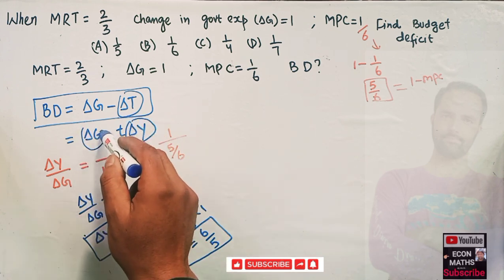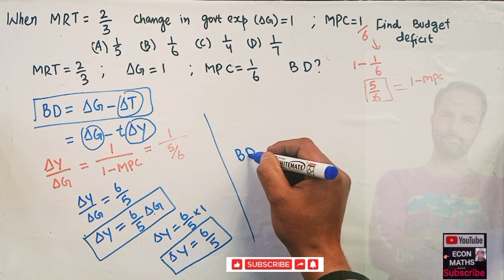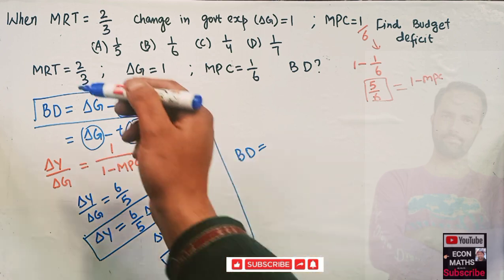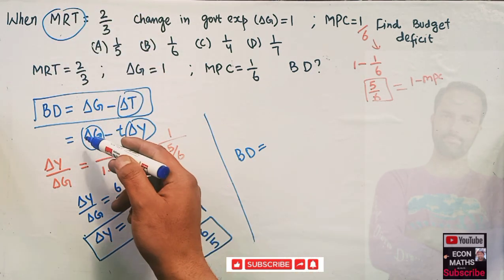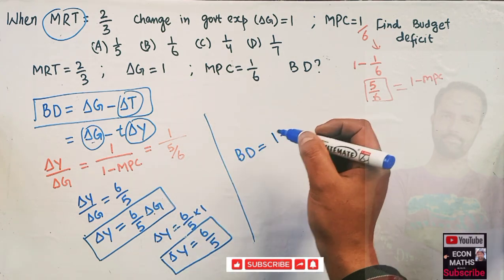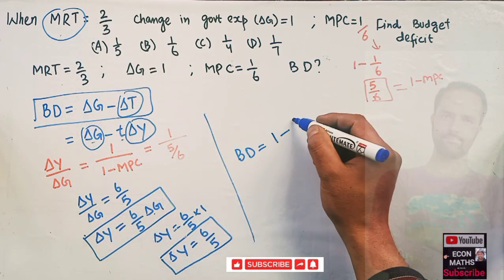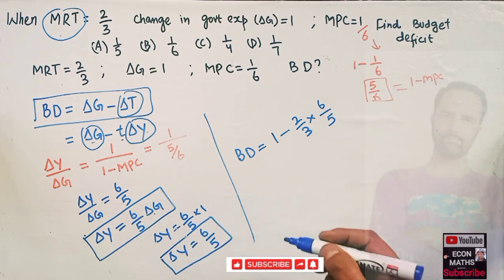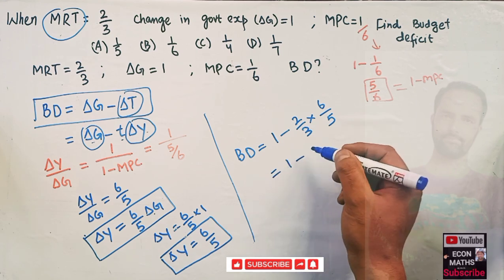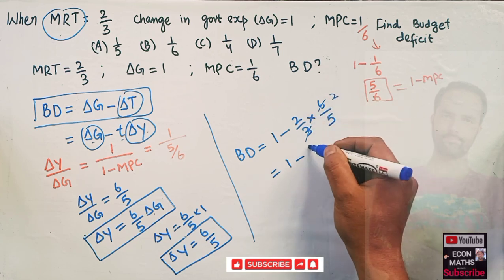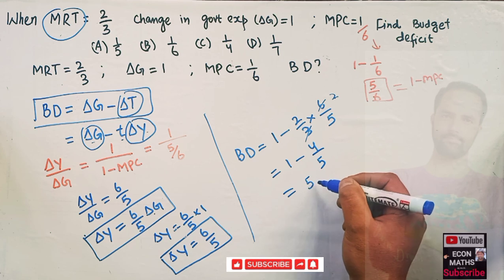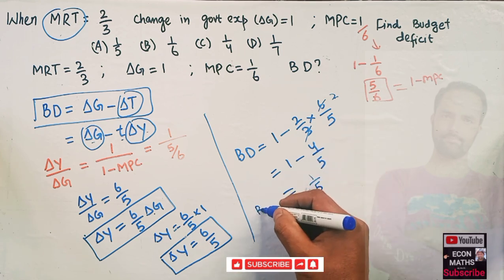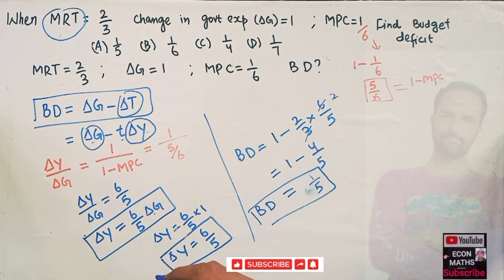Now we apply the budget deficit formula. Budget deficit = ΔG − t·ΔY. Substituting: ΔG = 1, t = 2/3, ΔY = 6/5. So budget deficit = 1 − (2/3 × 6/5) = 1 − (12/15) = 1 − 4/5 = 1/5. Therefore our budget deficit comes out to be 1/5, which matches option one.